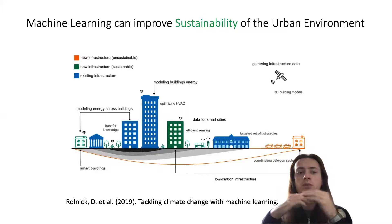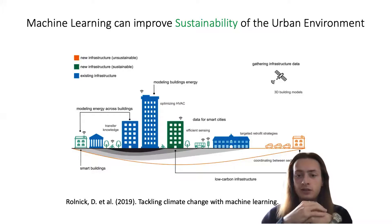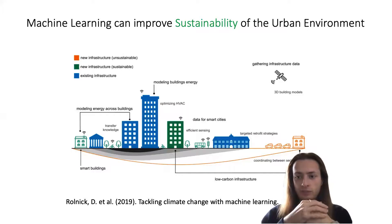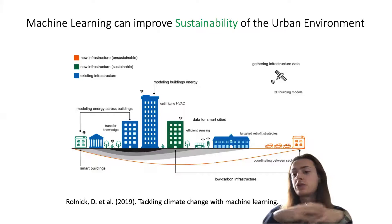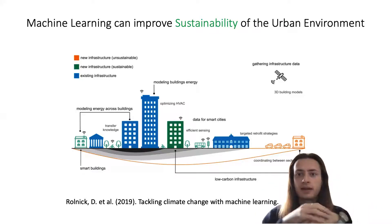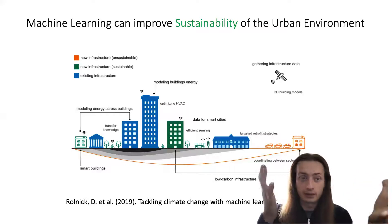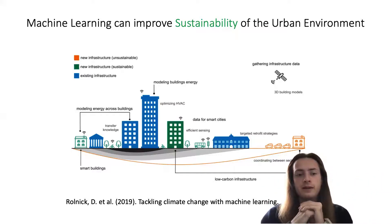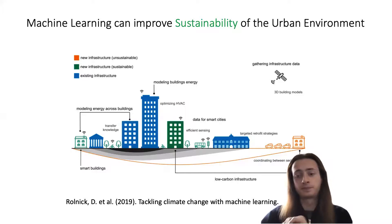Here you can see some ideas for improving the sustainability of the urban environment with the use of machine learning. You can model buildings' energy expenditure and optimize it. You can have smart buildings gathering data that can also be used to optimize it. In general, the whole branch of analyzing data, generating a lot of data, which can later be used to improve or understand some systems, can be greatly accelerated with machine learning.